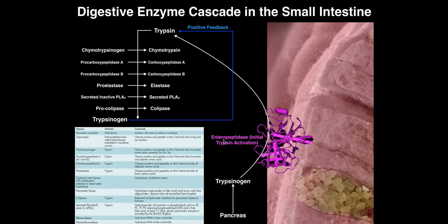What's also worth noting is that when enteropeptidase does the initial activation of trypsinogen into trypsin, trypsin also can act on trypsinogen. So trypsin can activate trypsinogen into more trypsin, which is a positive feedback cycle — trypsin can actually activate other molecules of itself. So if you start with three molecules of trypsin, you can end up with nine, then eighteen, and so on. Trypsin can activate itself by activating other molecules of trypsinogen secreted by the pancreas, and this acts to very rapidly amplify the activation of all these enzymes upon consuming a meal.